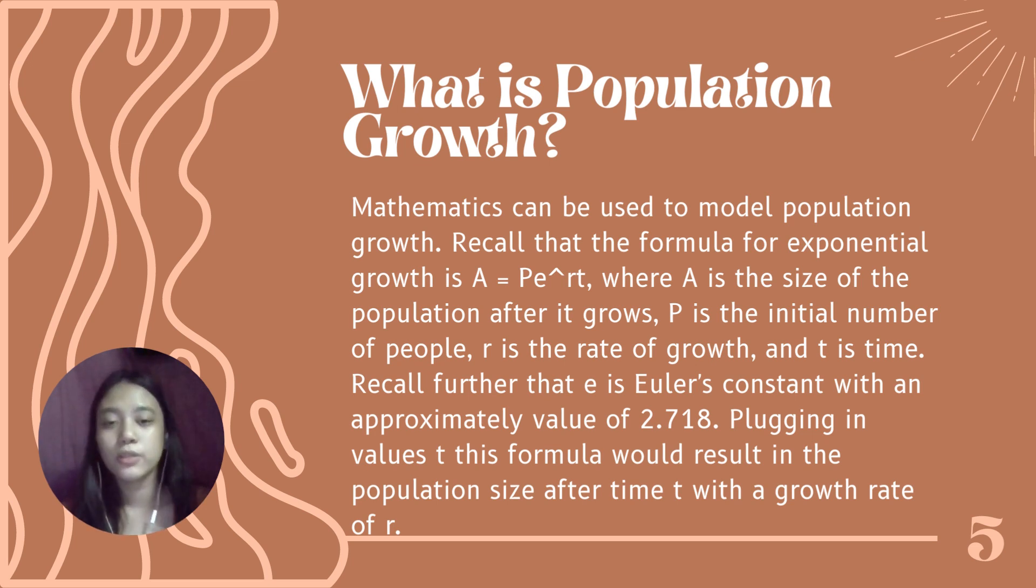Mathematics can be used to model population growth. Recall that the formula for exponential growth is A equals Pe raised to rt, where A is the size of the population after it grows, P is the initial number of people, r is the rate of growth, and t is time. Recall further that e is Euler's constant with an approximate value of 2.718. Plugging in values in this formula would result in the population size after time t with a growth rate of r.